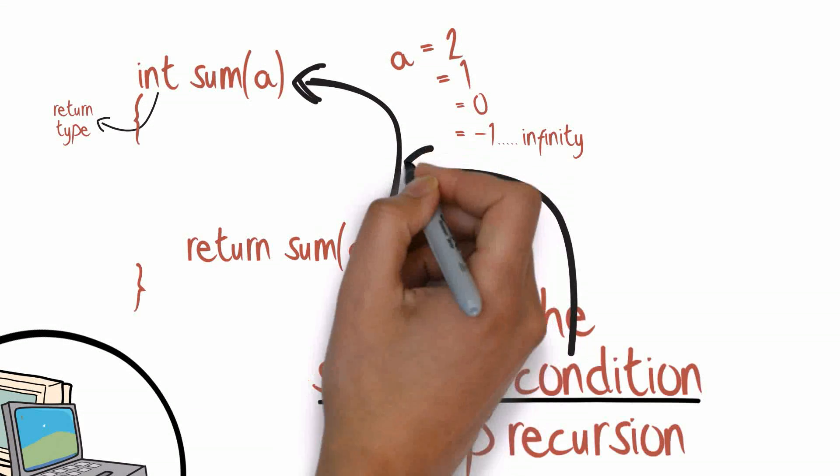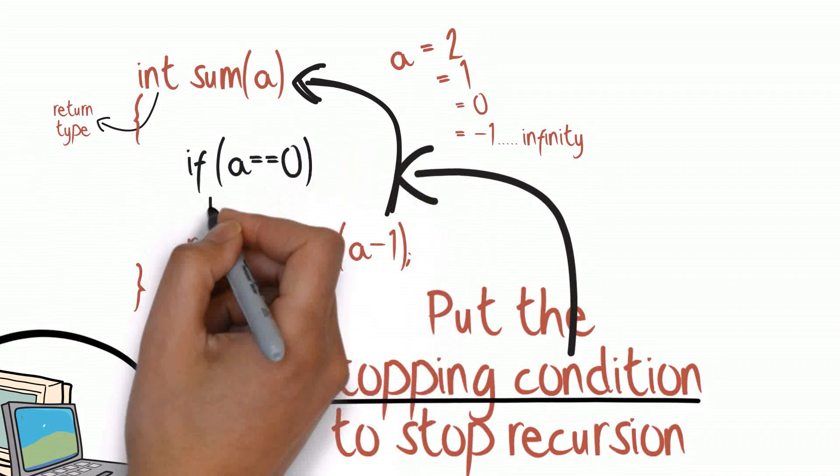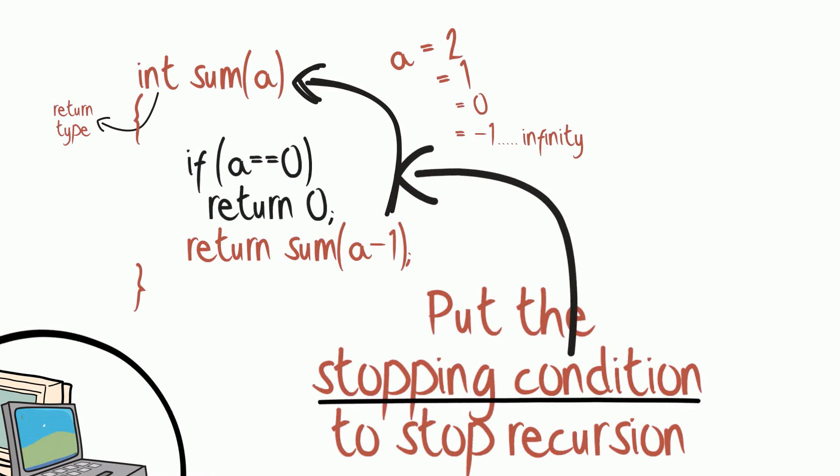So here, we put a stopping condition if a is equal to equal to 0, return 0. That is, here the recursion stops when the parameter a is 0.